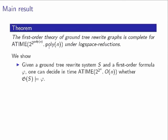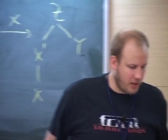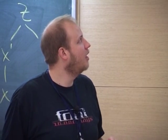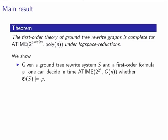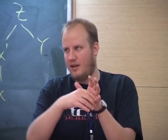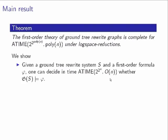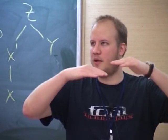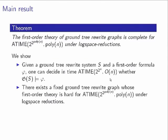On one hand, if both the system and the formula are part of the input, the model checking problem can be solved in this complexity class. The number of alternations is linear in the formula size, which is not surprising since alternations depend on the formula only, and the running time is 2^(2^n) where n is the input size. The upper bound is for the combined complexity. For the lower bound, we show there is already a fixed ground tree rewrite system whose first-order theory is hard for this complexity class under log-space reductions.